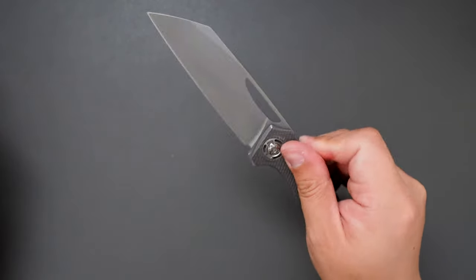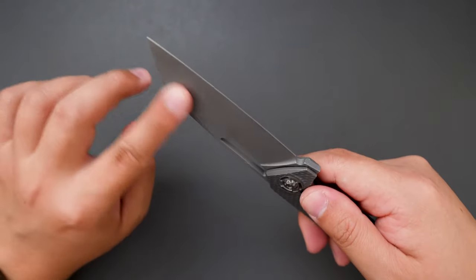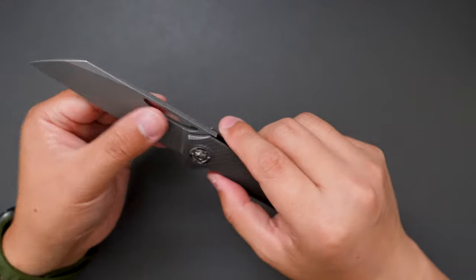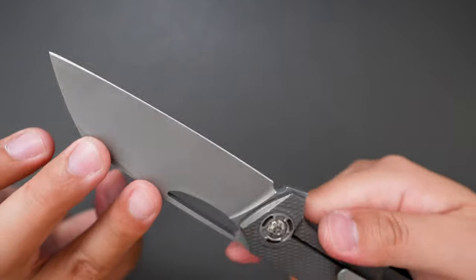And also this blade is in this kind of reverse tanto blade shape. Super good looking. And I think the blade is kind of like a dark stonewash.